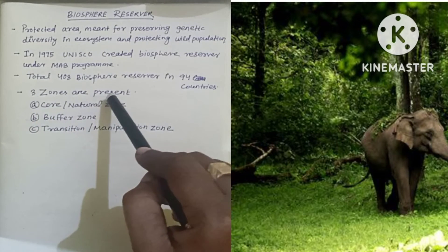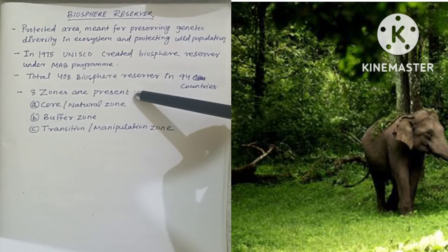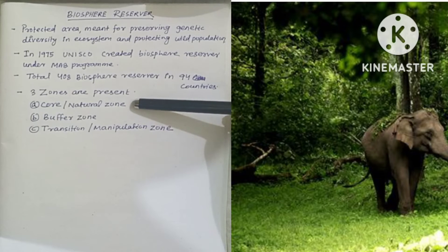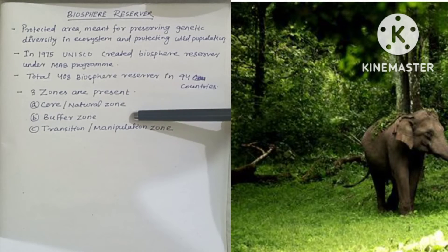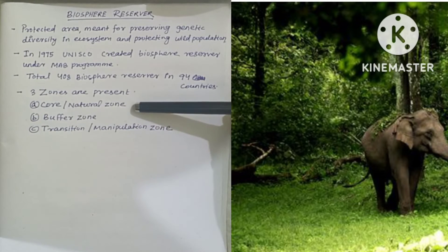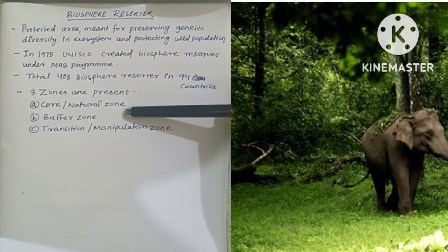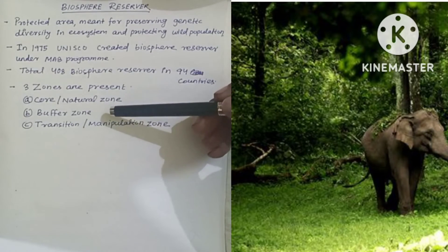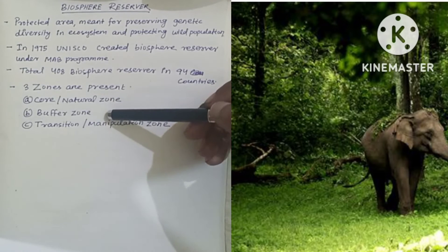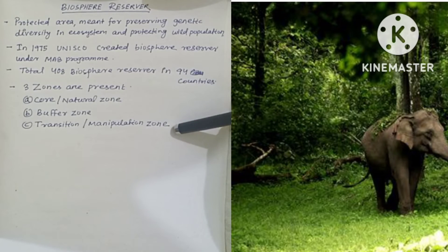There are three zones in a biosphere reserve: the core zone (or natural zone), the buffer zone, and the transition or manipulation zone. In the core zone, no human activity is allowed — it is an undisturbed, legally and culturally protected ecosystem. The buffer zone is used for research and education purposes.